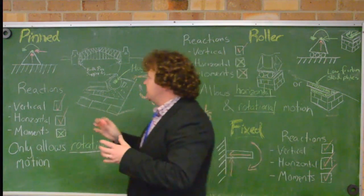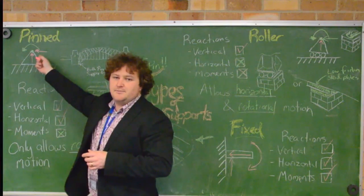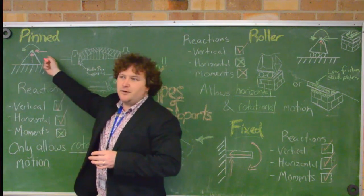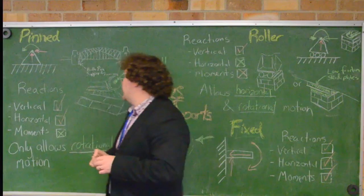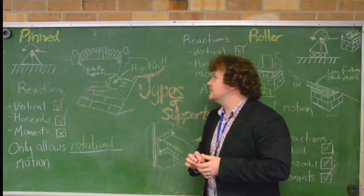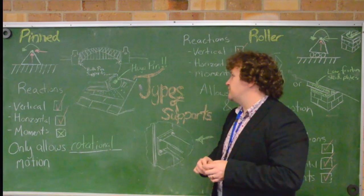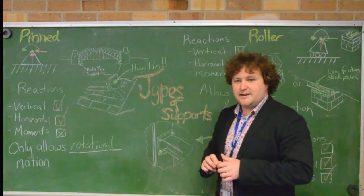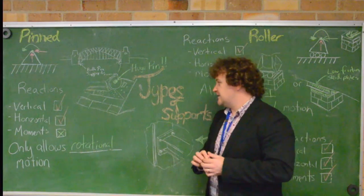we assume that all the joints are pinned apart from maybe the other reaction, which will be a roller. But all the joints in between, we say a pin joint and at least one support has to be a pin joint, even though it might not look like that. And that just helps us be able to analyze trusses and use them as they're expected.